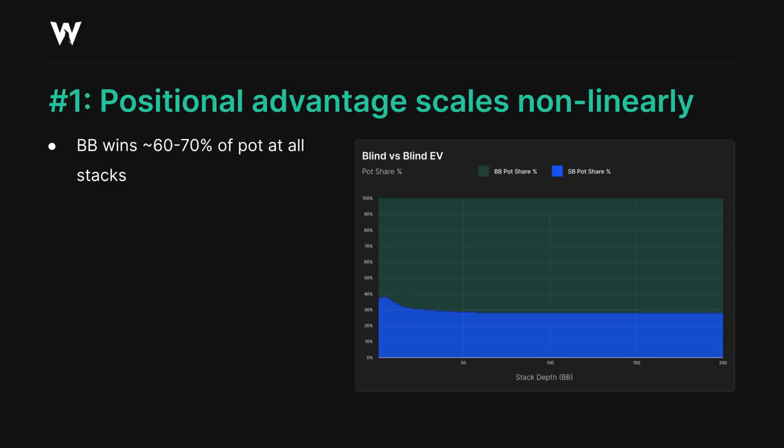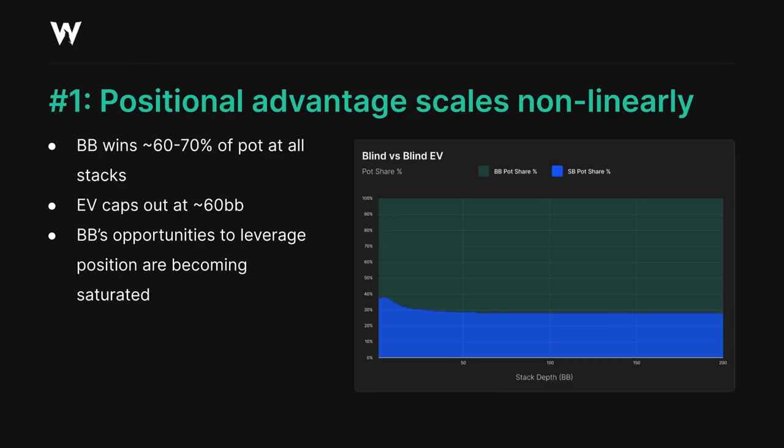However, an interesting trend occurs with the EVs of the two players. While the small blind's EV is higher at shallower stacks, since it's easier for them to realize equity in any postflop scenario, the big blind's advantage does seem to hit a ceiling once we reach approximately 60 big blinds stacks, and by the time we hit 80 big blinds, there's almost no change no matter how deep we get. This represents a saturation point for the big blind's positional advantage.